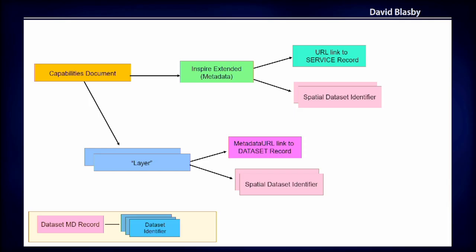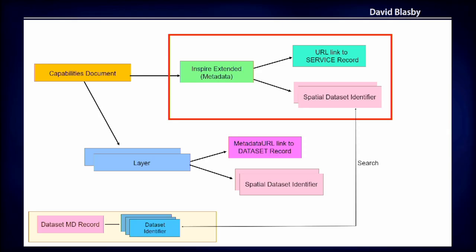There are two major components to an INSPIRE capabilities document. First is the INSPIRE extended metadata — shown in green at the top — which is a header to the document talking about information for the entire document; it may or may not be present. There's also a set of layers at the bottom — called feature types in a WFS and items in an Atom feed — which contains information specific to a layer. Note that datasets can be comprised of multiple layers.